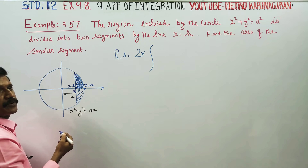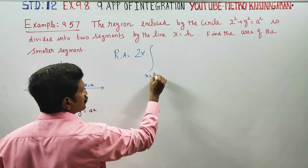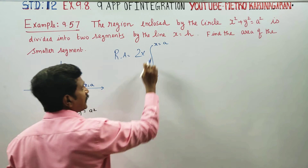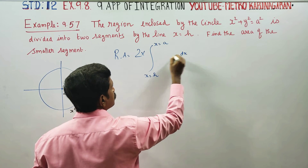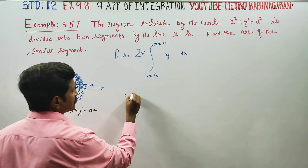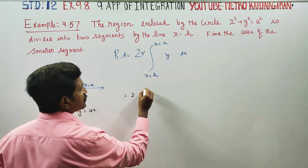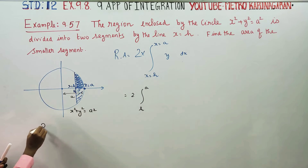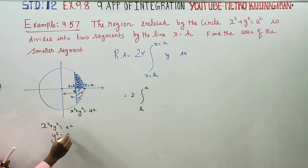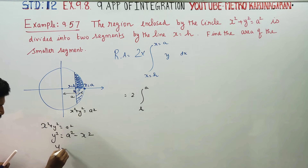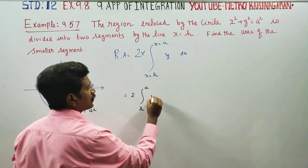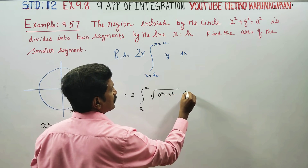Starting from x = h to x = a. This is the required area formula: 2 times, with lower limit h and upper limit a. y = √(a² − x²). I will substitute root of a² − x² dx.